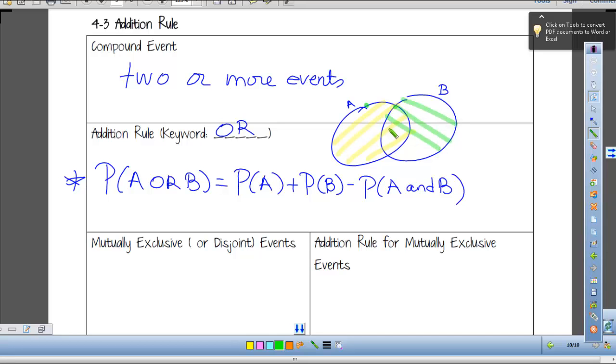And what happens? This little piece right here in the middle, it got counted twice. That's why I have to subtract off probability of A and B. Right here in this area is where we have A and B. So we subtract that off one time, that's where the formula comes from.